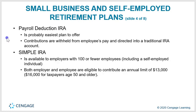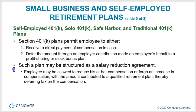A payroll deduction IRA is probably the easiest plan to offer — contributions are withheld from employees' pay and directed into a traditional IRA account. A Simple IRA is available to employers with 100 or fewer employees. Both employer and employees can contribute, with an annual limit of $13,000, or $16,000 for taxpayers age 50 and older. Self-employed 401(k) or solo 401(k) and safe harbor and traditional 401(k) plans are also available.